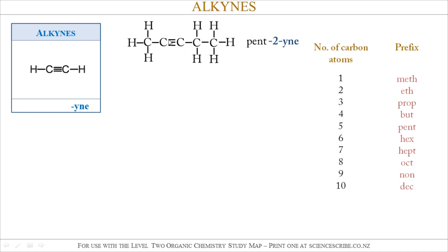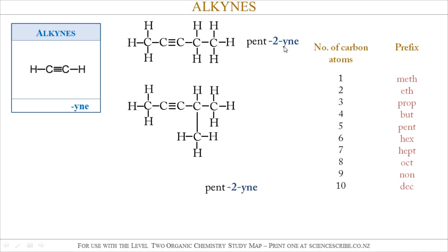If the triple bond had shifted across to the second carbon atom, it would be called pent-2-yne. Now, if I was to name this larger molecule, I'd do the exact same thing as before — just look for the longest chain which also contains the triple bond. In this case, the longest chain is five carbon atoms long, so it's 'pent'. It has a triple bond, so it ends with -yne, and the triple bond is at the second carbon atom, so it's pent-2-yne.